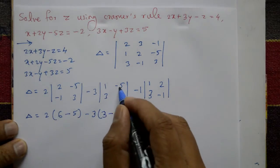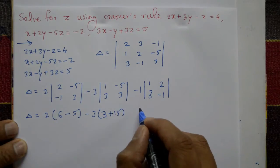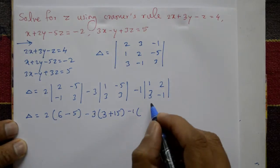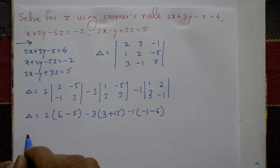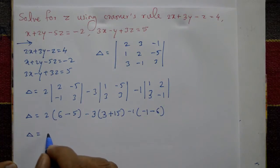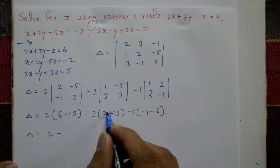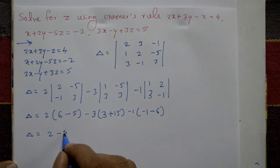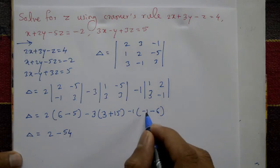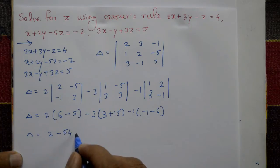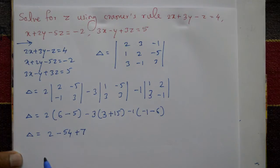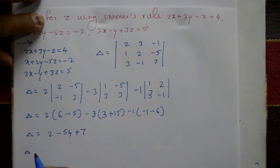Delta is equal to 2 into 6, minus, minus 1 into something, then plus 5. That gives 2 into this, 1 into 2, minus 18 into minus 3 is minus 54, and minus 1 minus 6 is minus 7, then minus 7 times minus 1 is plus 7. So Delta equals 9 and minus 54, which means minus 45. Delta is minus 45.